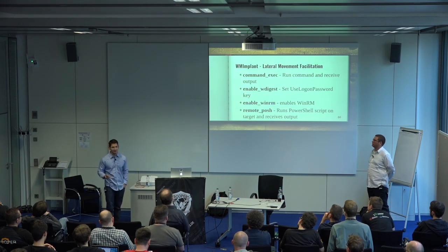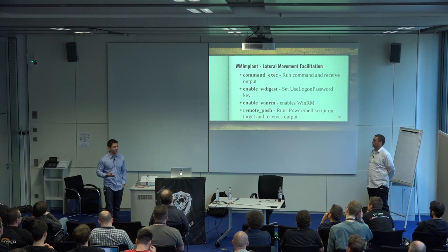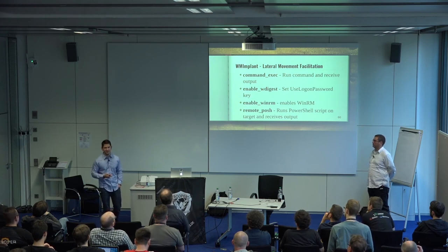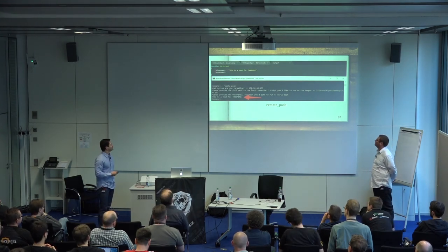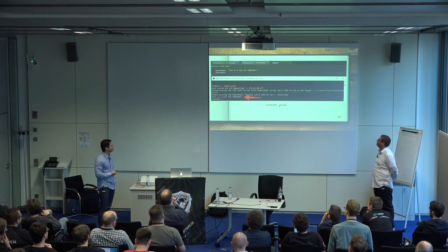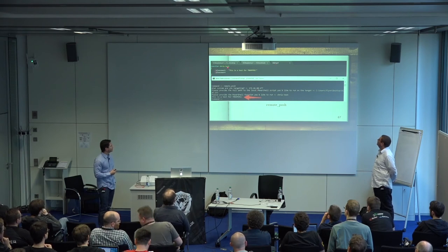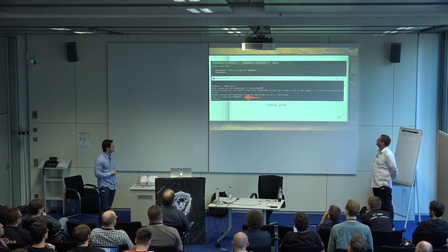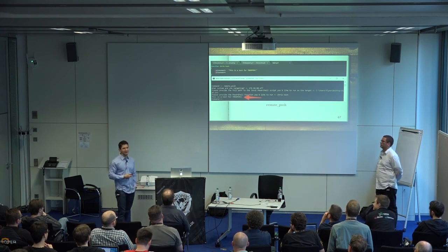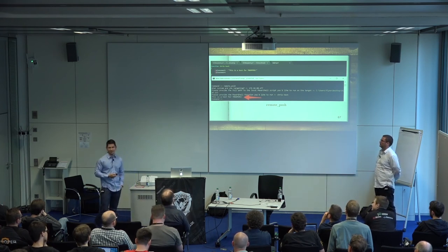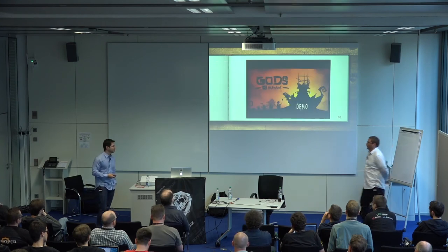The data from Remote-Posh comes back within that WMI property too, so good luck finding evidence of that running or any output being sent or saved on the remote system. Here's an example using Remote-Posh on a remote system, executing blah.ps1 which just outputs 'This test is for Troopers.' We push this remote script to that system, run the function 'chris_test,' and output comes back. Incredibly useful when you want to run things like Invoke-Mimikatz or other PowerShell scripts for post-exploitation.